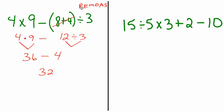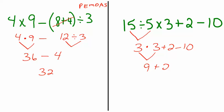Last one. Any parentheses? No. Exponents? No. Multiplication or division? Yes, I have both. Division comes first in the problem, so 15 divided by five is three. Rewrite the rest: times three plus two minus ten. Do my multiplication — that's nine. Rewrite the problem. Nine plus two is 11 minus ten — that would just be one. We've got some problems for you to work on; let's see how you do. Have a great day!